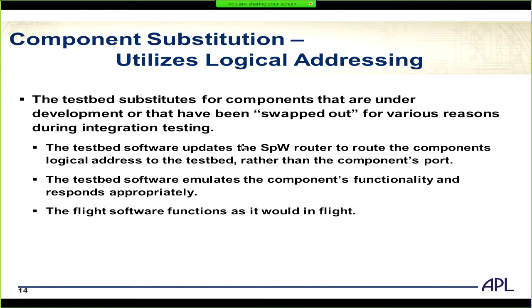For component substitution, the test bed updates the router table so that it becomes the destination for a component that's under development or has been swapped out. A software emulation in the test bed then performs the function that component was supposed to perform. For instance, since we're still developing the radios, the test bed has updated the router table via script to substitute for the radio, and we can test our flight software as if the radio were present.